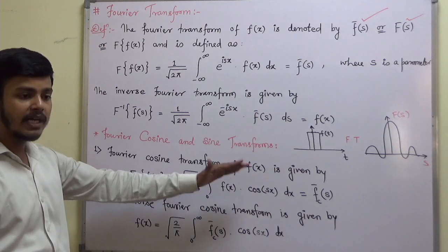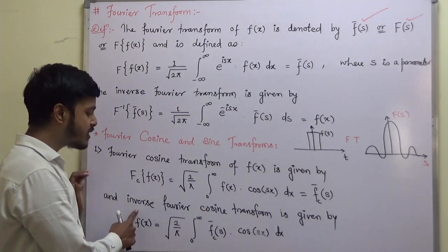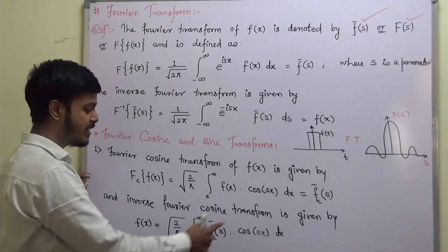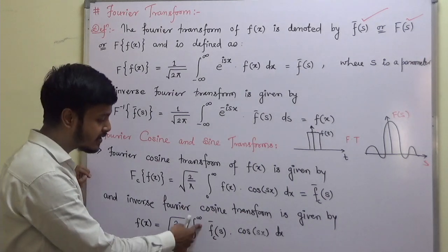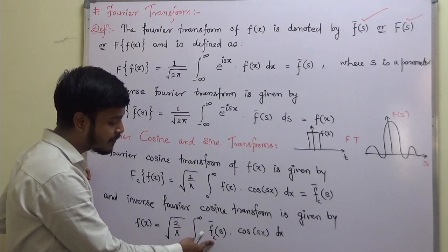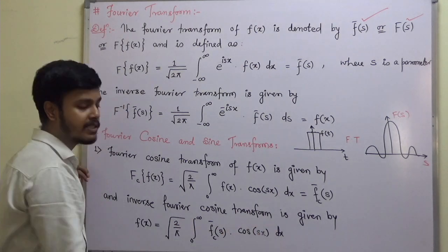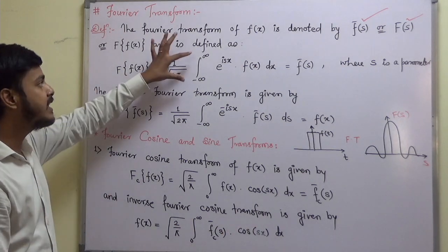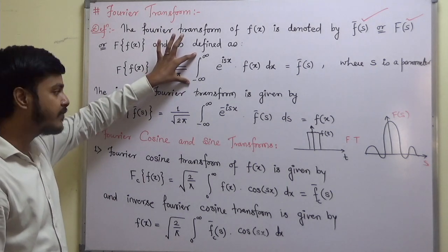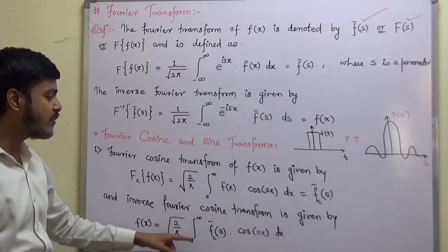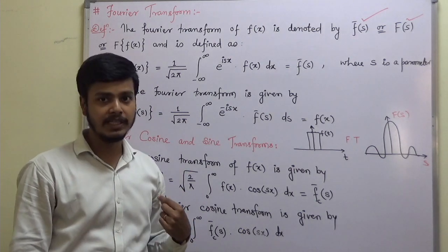These are the notations for Fourier cosine transform. The inverse Fourier cosine transform is: f(x) = √(2/π) ∫ from 0 to ∞ f̄c(s) cos(sx) dx. Note that the domain for the general Fourier transform is −∞ to ∞, whereas for the sine and cosine transforms the range is 0 to ∞.